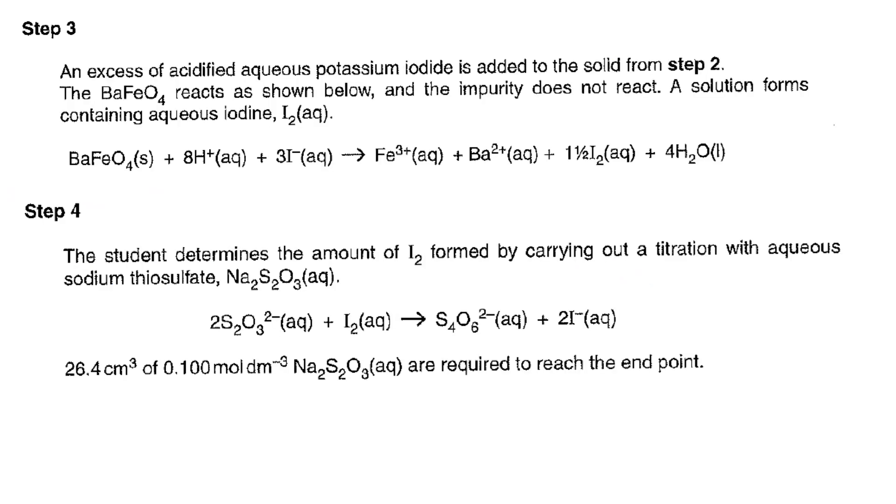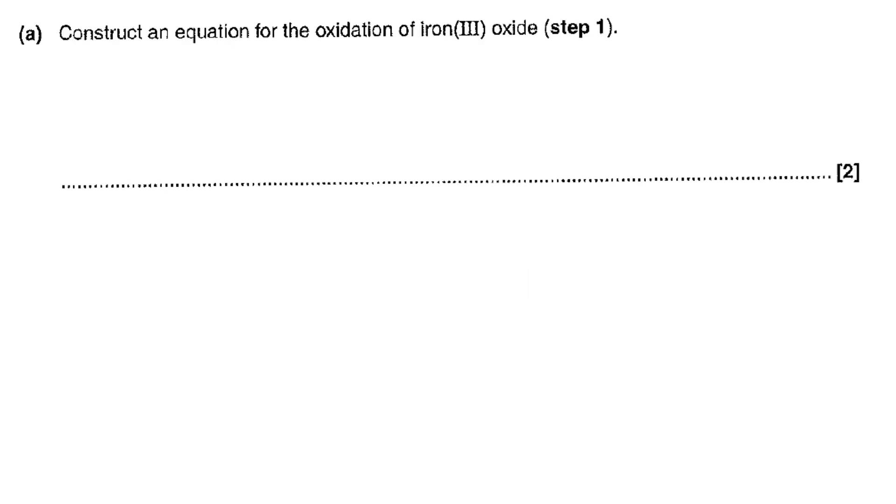The next part of the question describes titration procedure and the data that we need to work our way through that. That's coming up a bit later on in the question. So it says construct an equation for the oxidation of iron(III) oxide. Well we did that already by having a look at working out what happens in step one. So we dropped that into that part of the question.